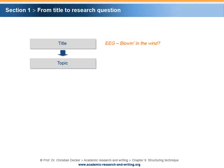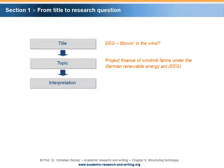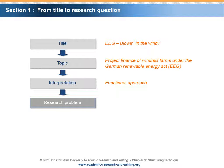The topic is project finance of windmill farms under the German Renewable Energy Act. The topic needs an interpretation. After having concluded a negative as well as a positive interpretation, we decide to follow a functional approach. Now we can start to define a provisional research problem. In short, the research problem could address that project finance of windmill farms requires an adequate mitigation of market risk.